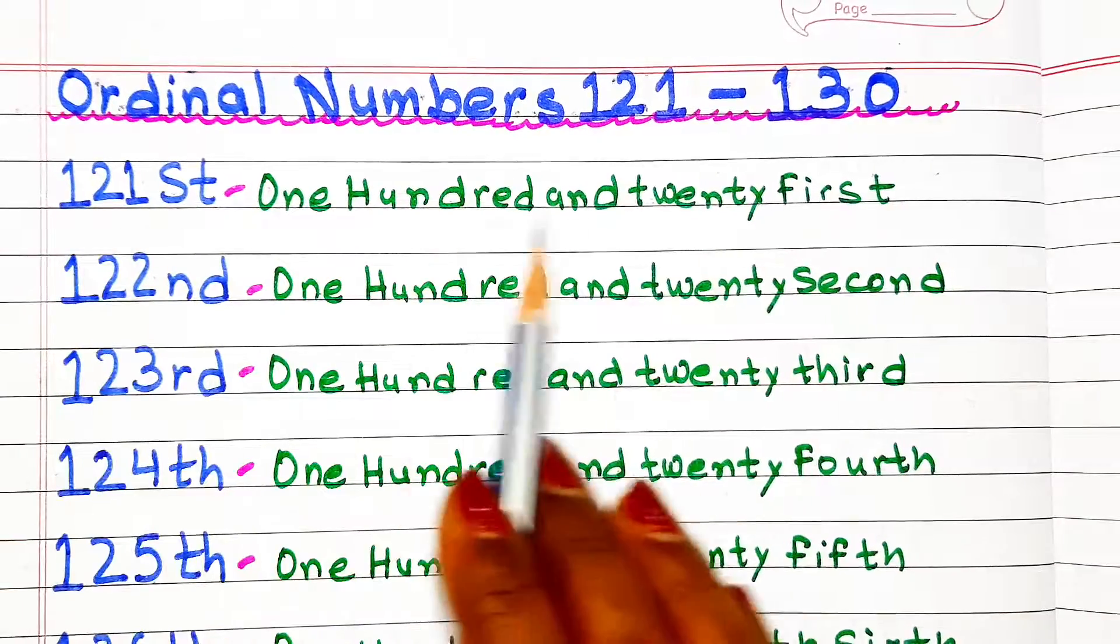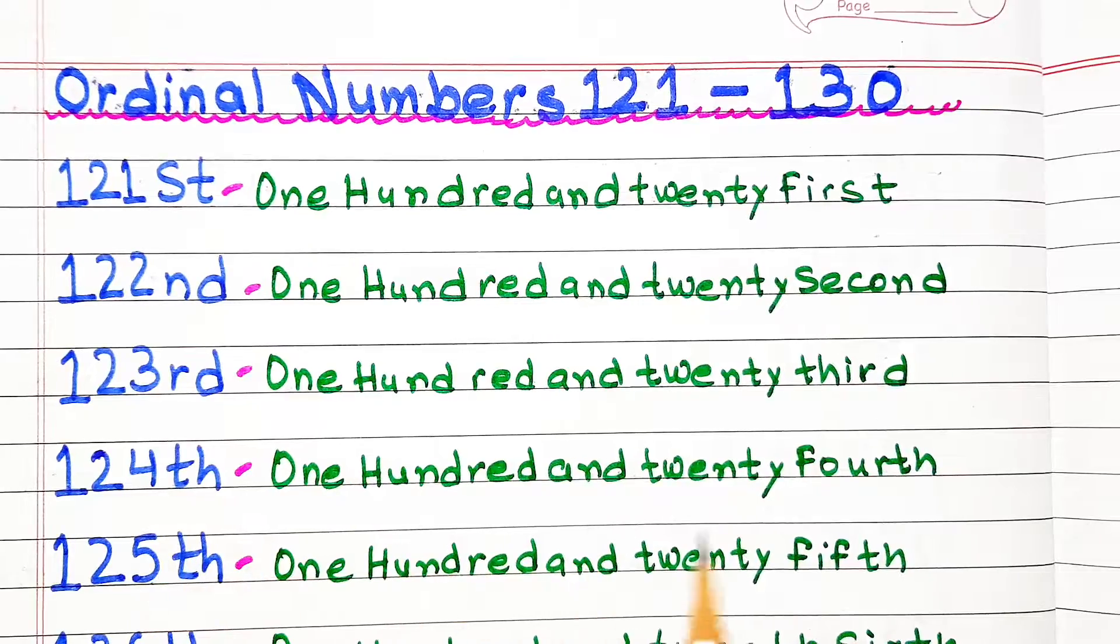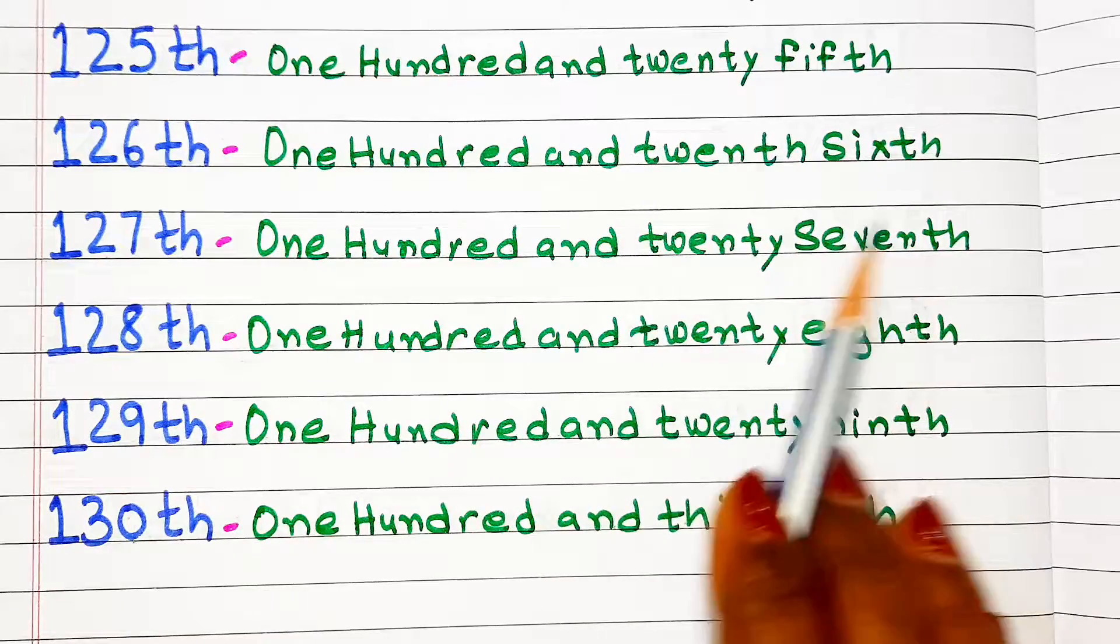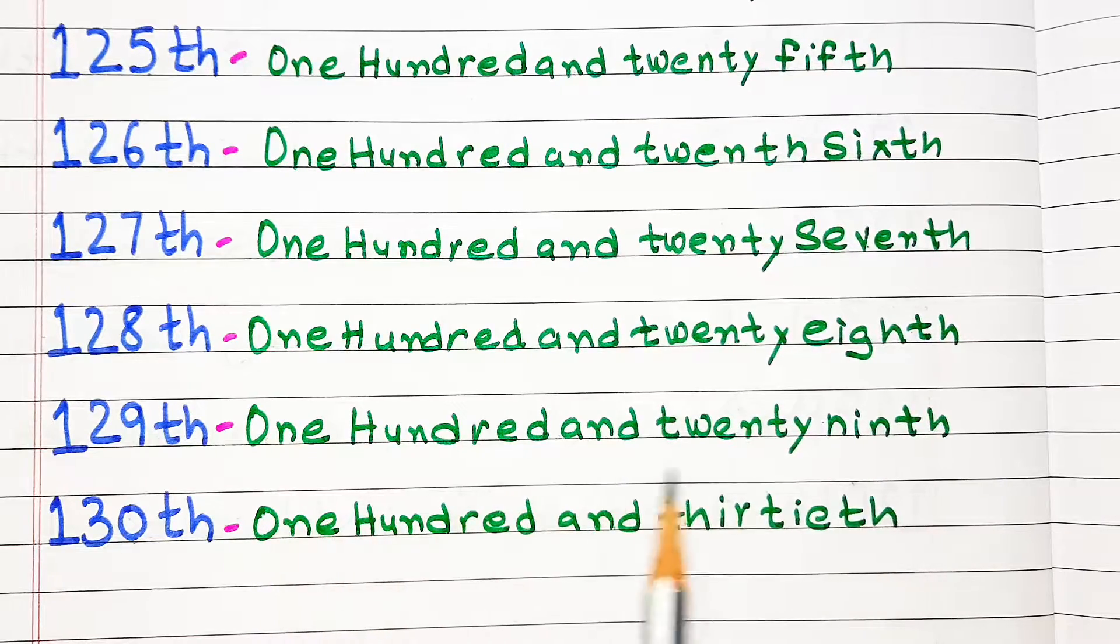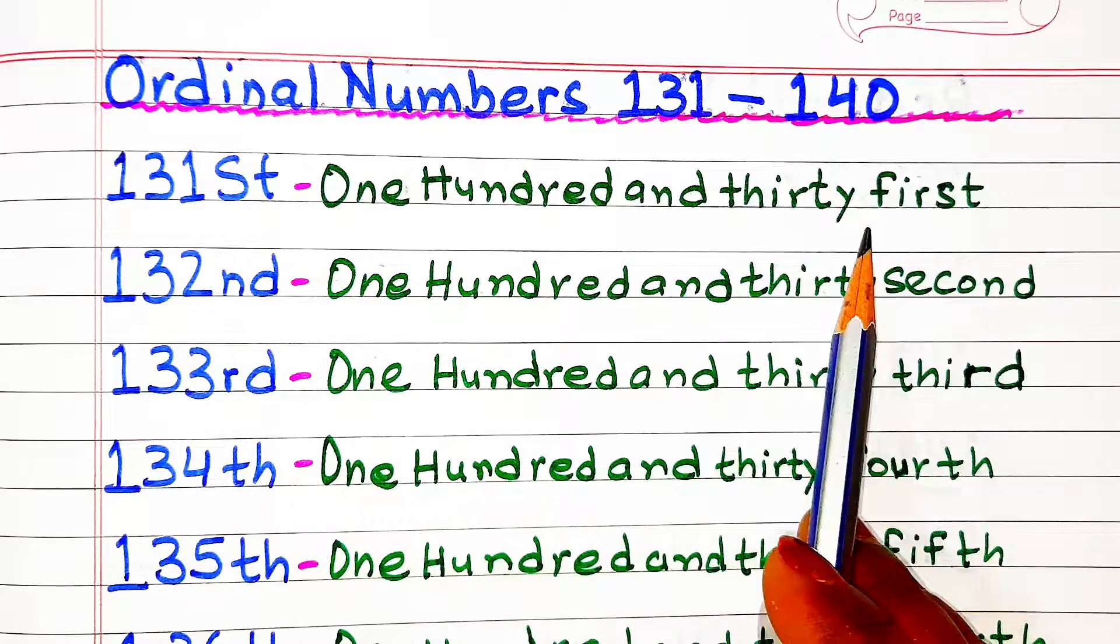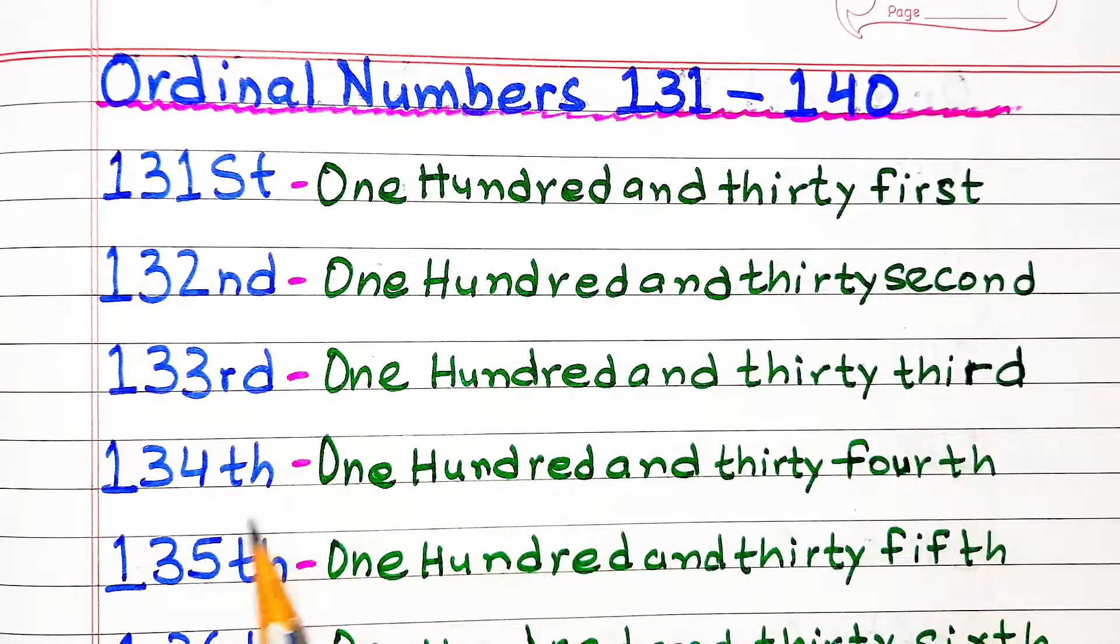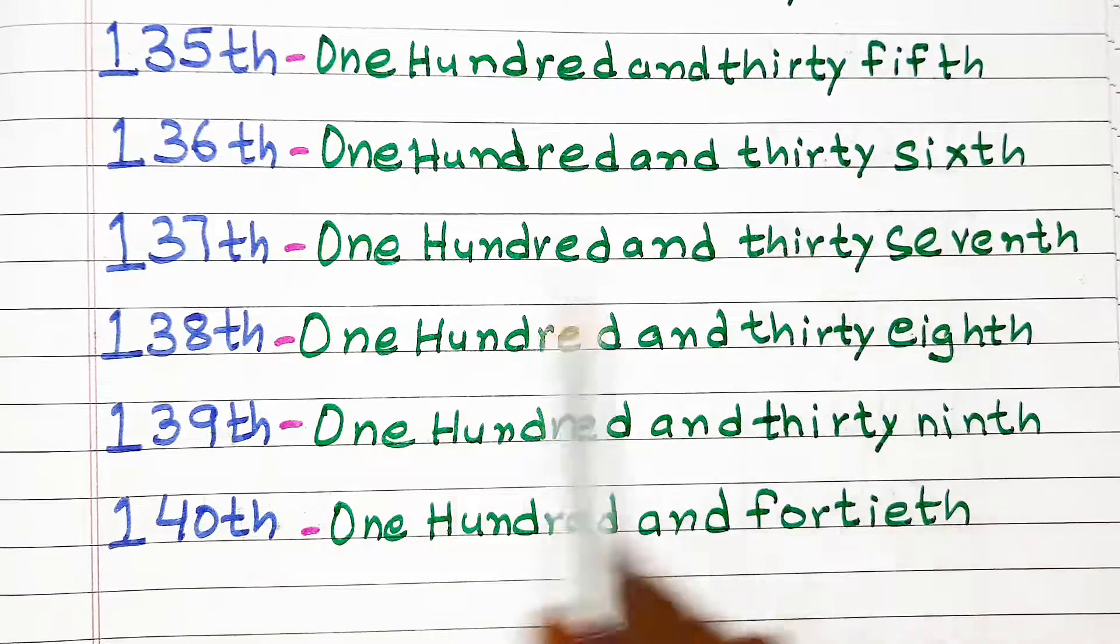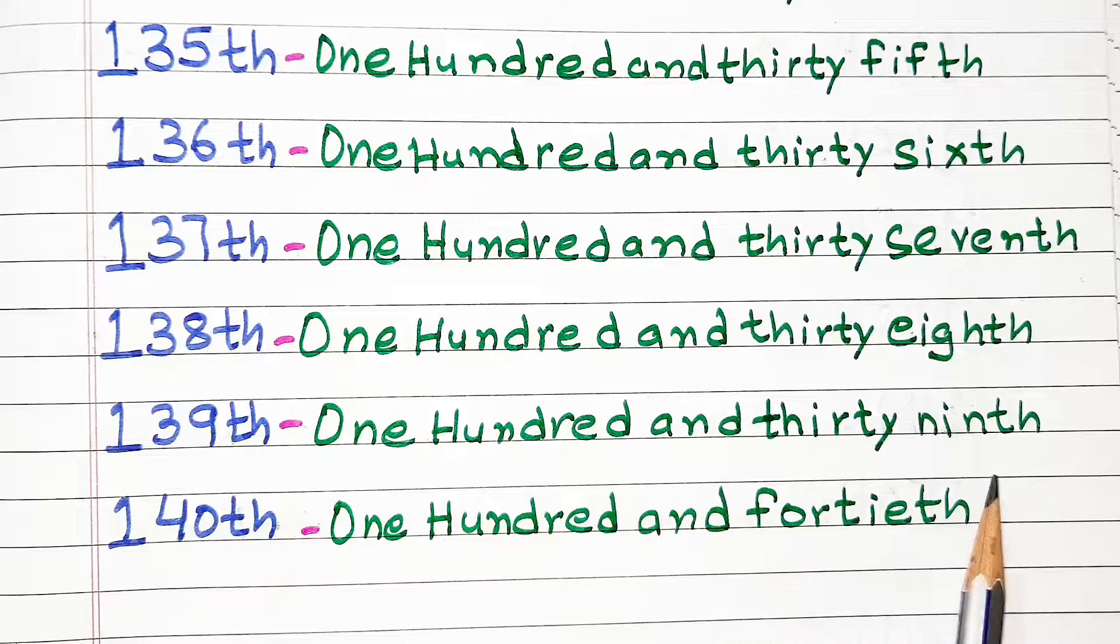One hundred twenty-first, one hundred twenty-second, one hundred twenty-third, one hundred twenty-fourth, one hundred twenty-fifth, one hundred twenty-sixth, one hundred twenty-seventh, one hundred twenty-eighth, one hundred twenty-ninth, one hundred thirtieth, one hundred thirty-first, one hundred thirty-second, one hundred thirty-third, one hundred thirty-fourth, one hundred thirty-fifth, one hundred thirty-sixth, one hundred thirty-seventh, one hundred thirty-eighth, one hundred thirty-ninth.